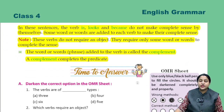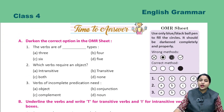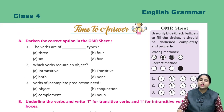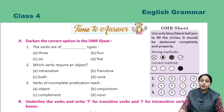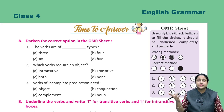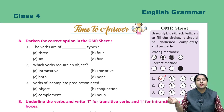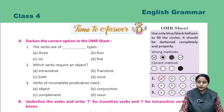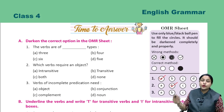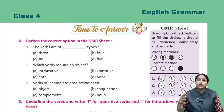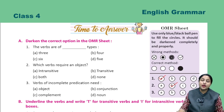Now it's time to answer. Section A: darken the correct option in the OMR sheet. First: the verbs are of how many types? Three types. Next: which verbs require an object? Transitive verbs. Next: verbs of incomplete predication need — they need a complement.